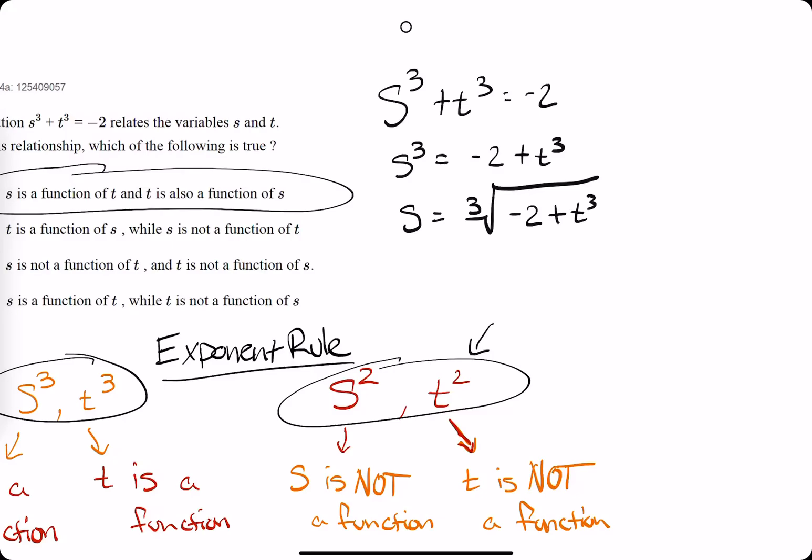And it is a function for sure, because when you have a cube root of some polynomial like that on the inside, then it should pass the vertical line test. Or in other words, for every input, there should be just one output.